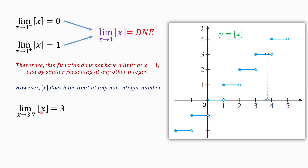Actually, for finding this limit we don't need to look at the graph. We can find the limit easily with just a simple plug-in: if we plug in 3.7 for X, the greatest integer of 3.7 equals 3. This function runs the number down to the nearest integer, and if we round down 3.7 we get 3.